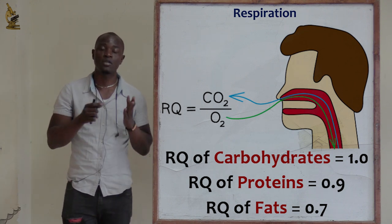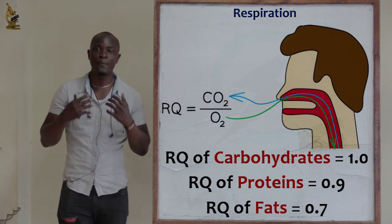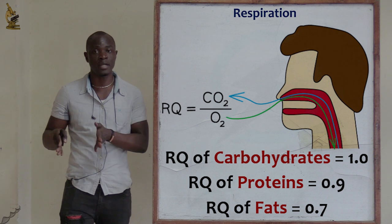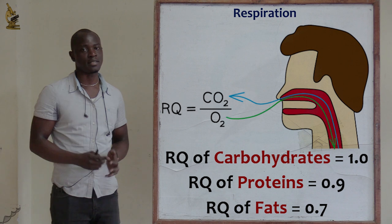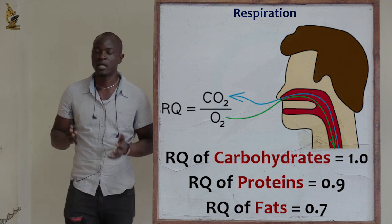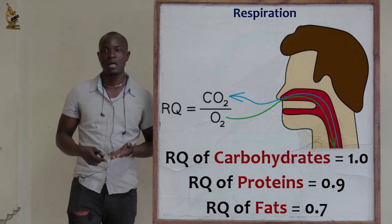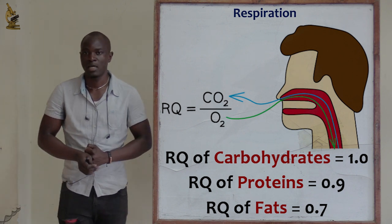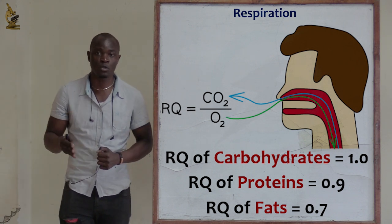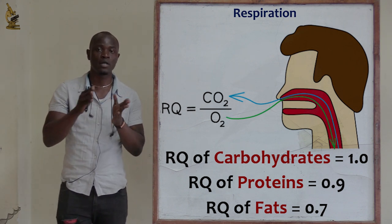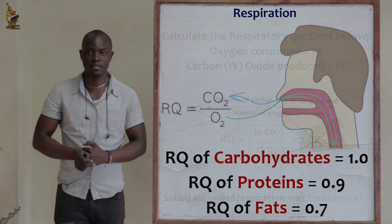Therefore, the respiratory quotient in anaerobic respiration will be infinity — it goes up to a very large value because only one gas is involved and there is no comparison between two gases. We cannot calculate the respiratory quotient in this case. That is why the formula for RQ must involve two gases: oxygen and carbon dioxide.